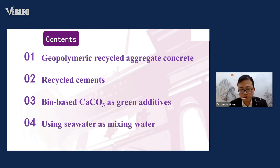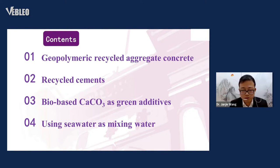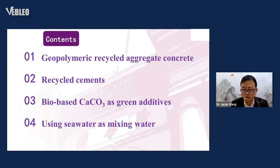The second part is recycled cement, so the cement is recycled. The third part is bio-based CaCO3 as green additives, used to replace part of the ordinary cement. The fourth part is using seawater as mixing water, replacing fresh water in concrete production. Let's start with the first part.